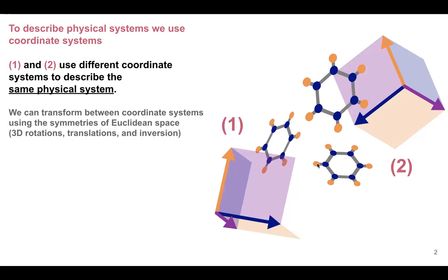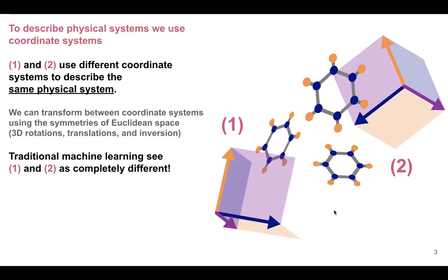The problem is that traditional machine learning sees these two coordinate descriptions as completely different. Show it one description, show it another — it treats them as absolutely unrelated. This is unfortunate because we want to do difficult things with machine learning, and coordinate systems are pretty basic.